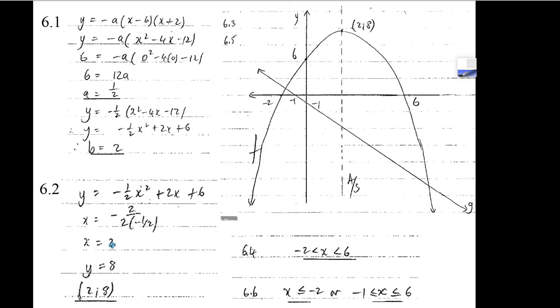How can we figure out what y is? Just take this 2 and put it back in here. So 2 times 2 is 4, 4 plus 6 is 10. 2 squared is 4, minus 1 half times 4 is minus 2. 10 minus 2 is 8. So 2 and 8 is your turning point.